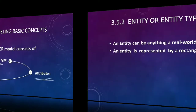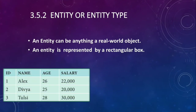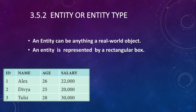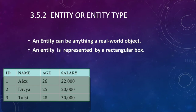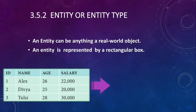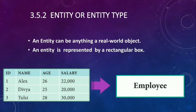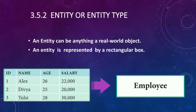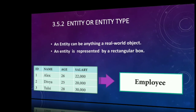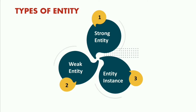Entity means nothing but a table. In this table we have four columns and three records. The first row is the heading row, called the relation schema. Rows two, three, and four are the records. We represent this table as a rectangle box, which is called the entity. Since this table is about employee details, the entity value is 'Employee'.